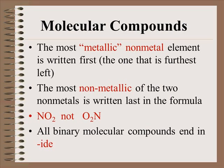When we were writing ionic compounds, we would write the metal first. When you are writing a covalent or molecular compound, the most metallic non-metal element, that is the element that is furthest to the left, is written first. So you would write NO2 and not O2N. And then all binary compounds are ending in ide as usual.